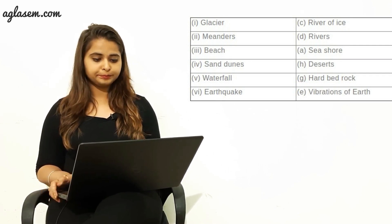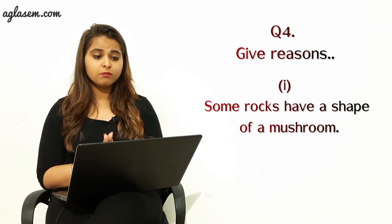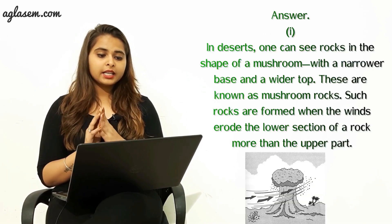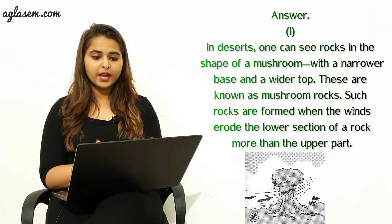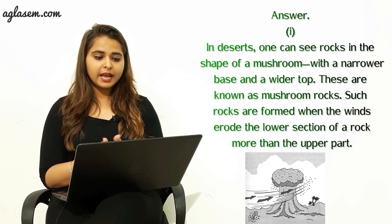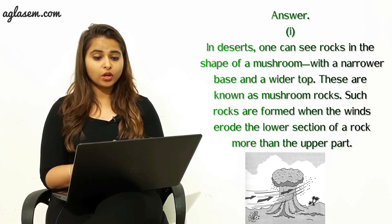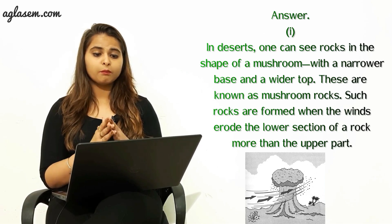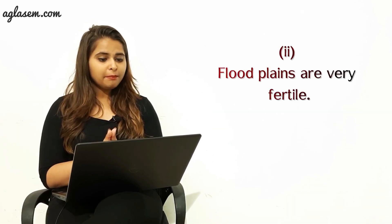The fourth question: give reasons. Part A — some rocks have the shape of a mushroom. The answer is: in a desert one can see rocks in the shape of a mushroom, with a narrower base and a wider top. These are known as mushroom rocks. Such rocks are formed when the wind erodes the lower section of the rock more than the upper part.